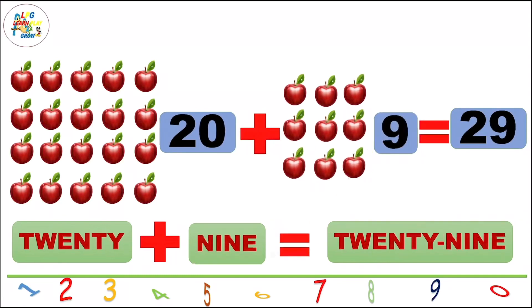20 plus 9 is equal to 29. T-W-E-N-T-Y, twenty, N-I-N-E, nine. Once more: T-W-E-N-T-Y, twenty, N-I-N-E, nine. 29.